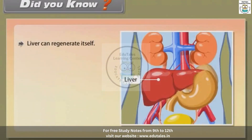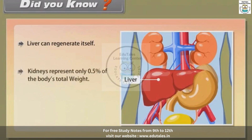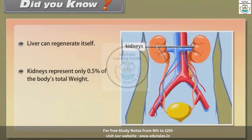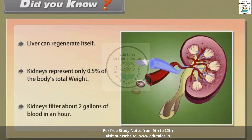Did you know? The liver can regenerate itself. Kidneys represent only 0.5% of the body's total weight. Kidneys filter about 2 gallons of blood in an hour.